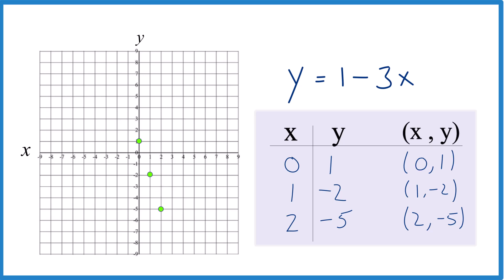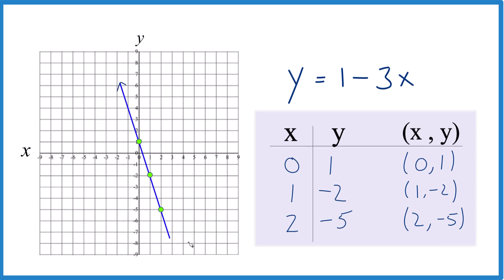Let's put a line through that. And we'll put arrows here, show that it goes to infinity. And that is the graph for y equals 1 minus 3x.